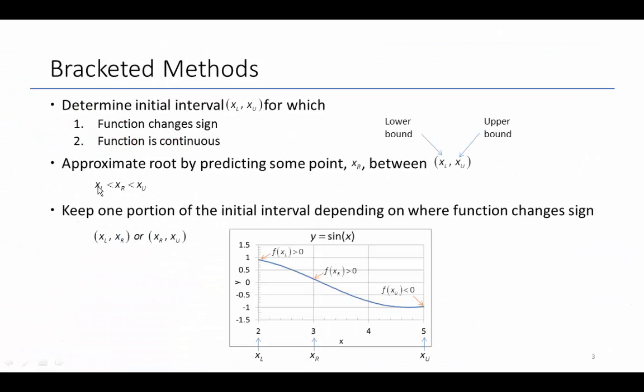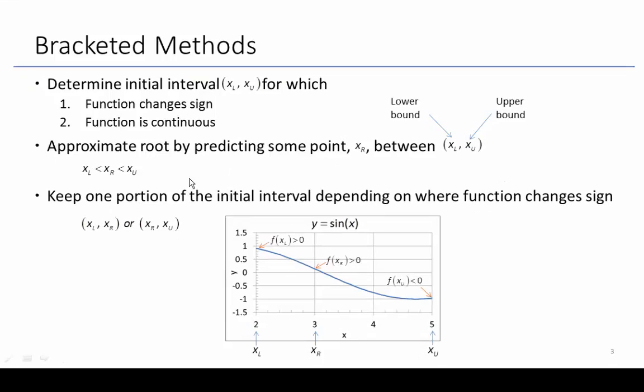The way a bracketed method works is we determine an initial interval—the lower bound XL and the upper bound XU—through which the function changes sign and is continuous. Then we approximate a root by predicting some point XR between them. We need to make sure that XR is greater than XL but less than XU. Once we do that, we keep one portion of the interval depending on where the function changes sign.